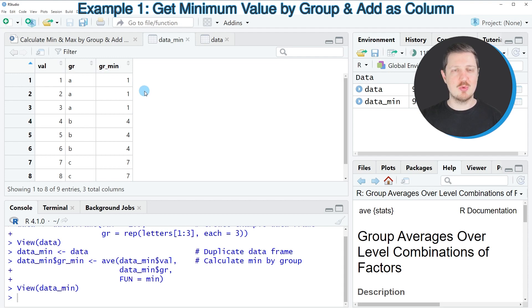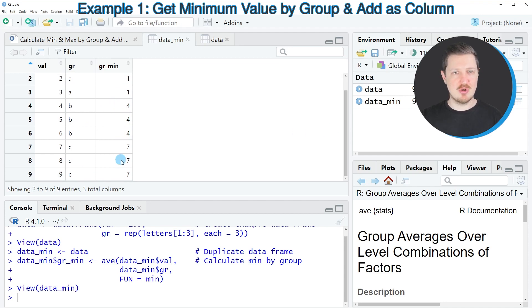And this column always contains the minimum value of each group. So for instance the minimum value of the group A is equal to 1, the minimum value of the group B is equal to 4 and the minimum value of the group C is equal to 7.